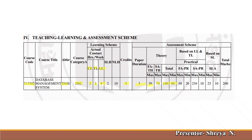For practicals, internal practical maximum marks is 50 and you need at least 20 to pass. External practical is 25 marks, minimum required is 10. SLA — Subjective Learning Assessment — covers assignments, tests, and presentations: maximum 25 marks, minimum 10 required. The total marks for DMS subject is 200 marks — remember this.